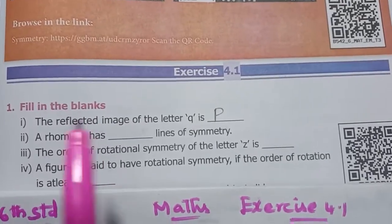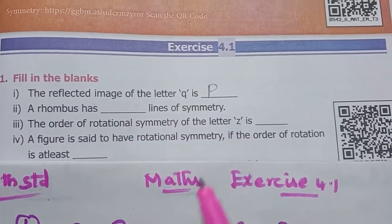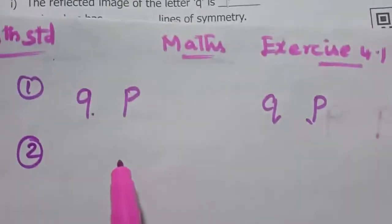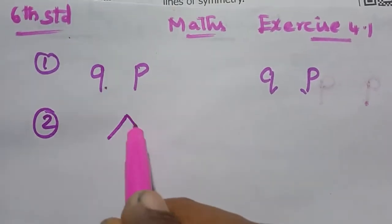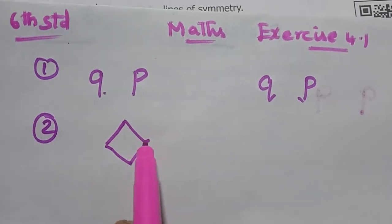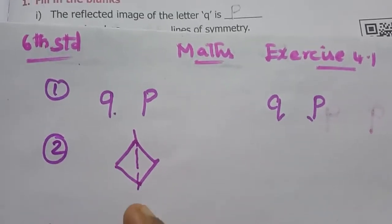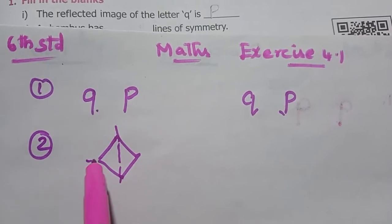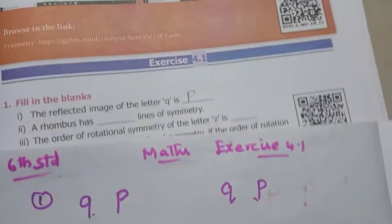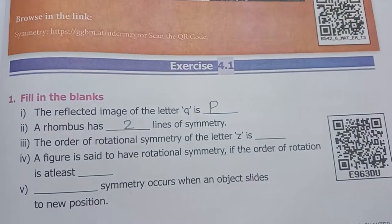Second one: a rhombus has dash lines of symmetry. A rhombus — if you fold it one way it is symmetry, if you fold it the other way it is also symmetry. So 1, 2 — two lines of symmetry.